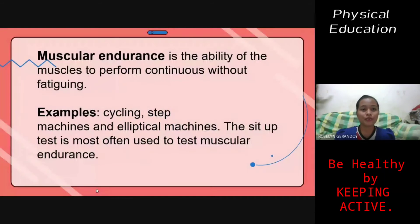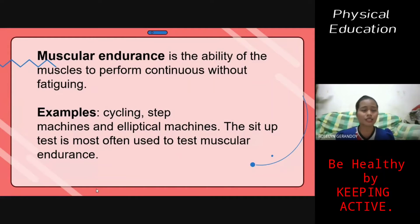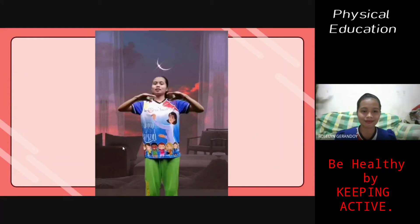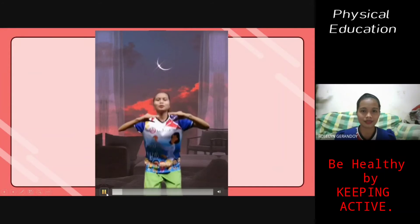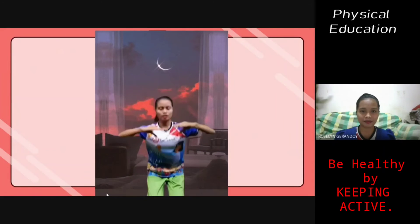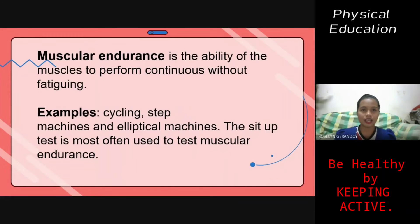Muscular endurance is the ability of your muscles to perform continuous activities without fatiguing. Examples include cycling, step machines, and elliptical machines. The sit-up test is most often used to test muscular endurance. As shown in the video, muscular endurance is the ability of your muscles to perform different sets of exercises, with your body continuously performing without fatiguing.